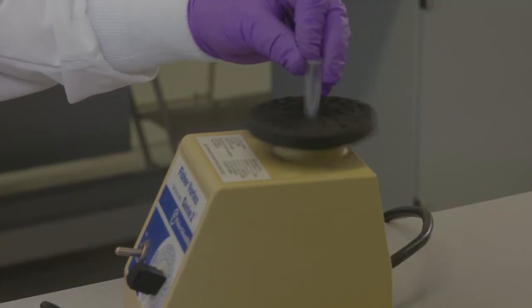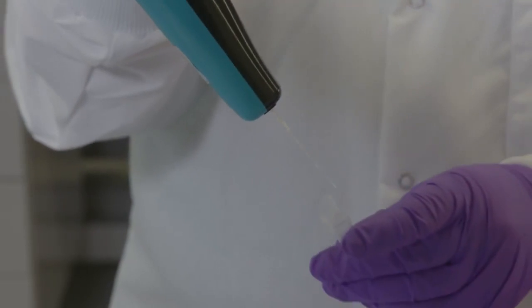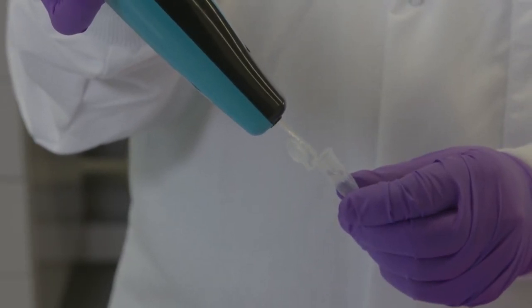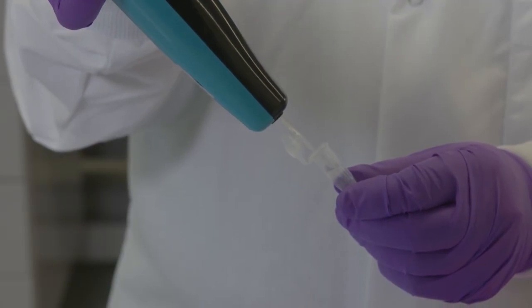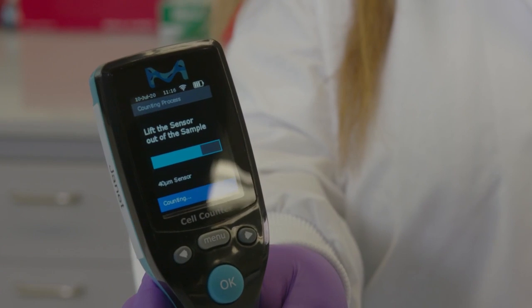Once the test sample is mixed well, open the sample lid and insert the sensor tip to the bottom of the tube, making sure it's not resting on the bottom, and press OK to start test. Once the beep is heard, the sample has been drawn and you can remove the sensor tip from the solution.